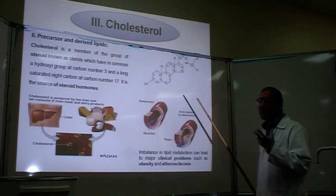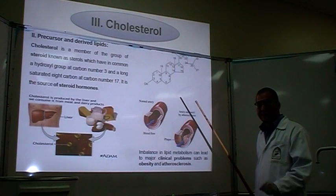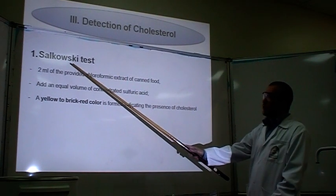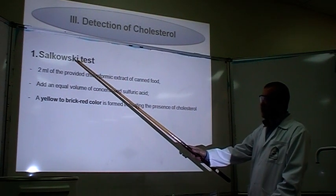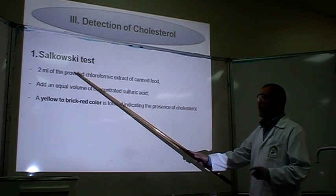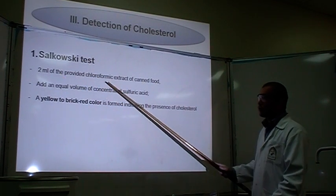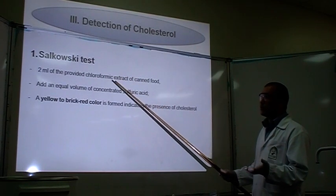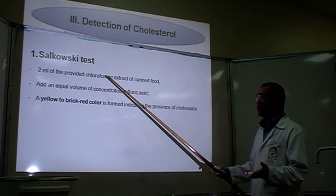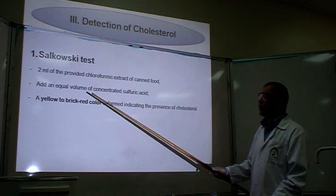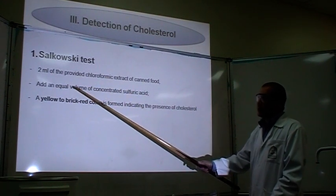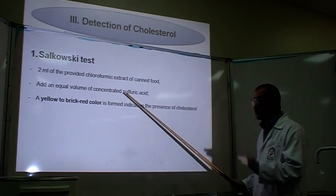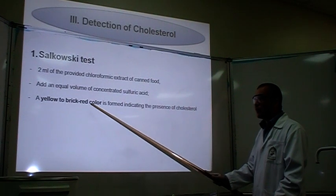So how do you identify cholesterol? The first experiment is called Salkowski — a very simple experiment. In this experiment, you need two ml of chloroformic extract of cholesterol. Because cholesterol doesn't dissolve in water, it dissolves in chloroform. When you add it and mix it, add an equal volume of concentrated sulfuric acid in chloroform. What you'll get is a yellow to brick-red color.